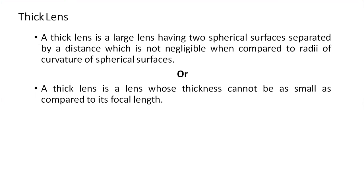A thick lens is a large lens having two spherical surfaces separated by a distance which is not negligible when compared to the radius of curvature of the spherical surfaces. Alternatively, a thick lens is a lens whose thickness cannot be considered small as compared to its focal length.